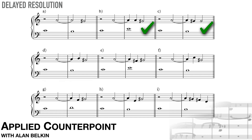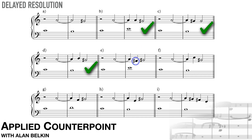D is a new situation. The new note intervenes before the resolution arrives. But since the B is consonant with the B in the cantus, it doesn't create a distraction. E is more interesting. Here the intervening F-sharp is dissonant with E in the cantus, but it still works because both the suspended A and the F-sharp resolve to the same note, G-sharp.